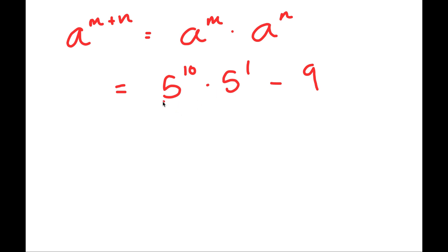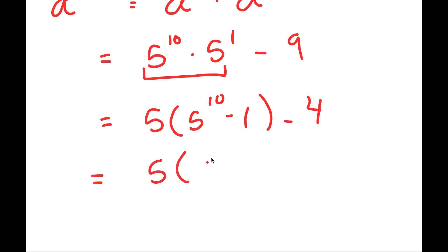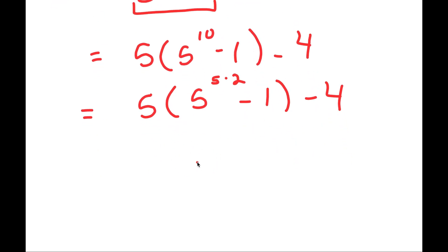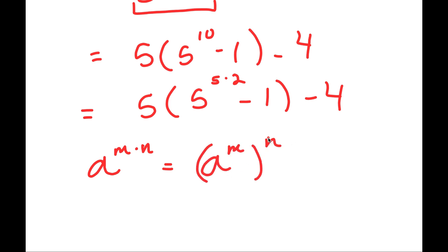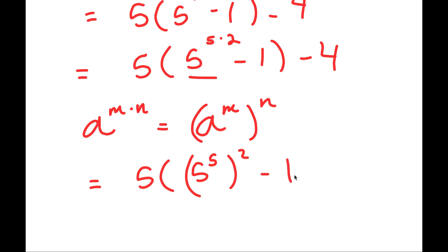From here, I can factor out 5, giving 5 times 5 to the power of 10 minus 1, minus 4. I'm rewriting 5 to the power of 10 as 5 to the power of 5 times 2. Another property of exponents to remember is that a to the power of m times n equals a to the power of m, to the power of n. So 5 to the power of 5 times 2 can be rewritten as 5 to the power of 5, squared — and then we have minus 1 minus 4.